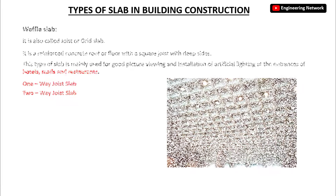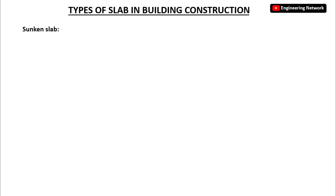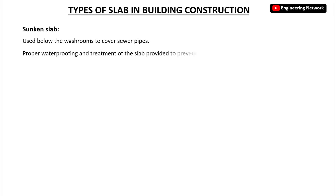The next type is the sunken slab. This type of slab is used below washrooms to cover sewer pipes. Proper waterproofing and treatment of the slab is provided to prevent leakage or moisture.